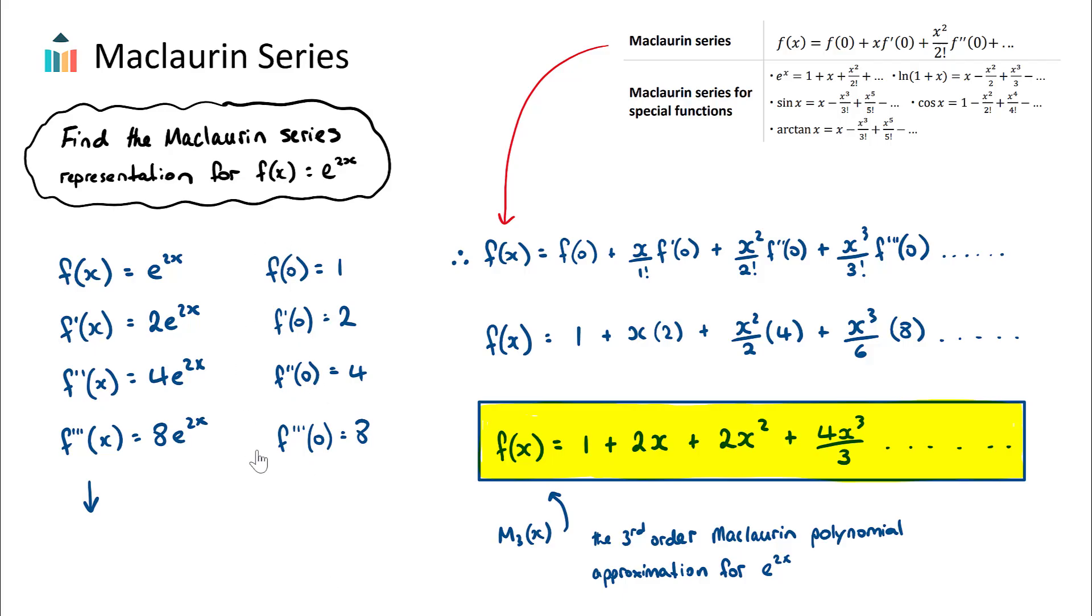But what we can do is now take these and substitute them directly into our Maclaurin series formula, which is in our formula booklet. What this says is that the Maclaurin series, we can find a function f of x, which will be our approximation, our polynomial approximation for whatever function we were given. And it's simply just f of 0, which we have here, plus x times the first derivative of f when we substitute in x equals 0. In the formula here, this doesn't actually have a divided by 1 factorial, but it is quite nice to put this in here because then all of the future terms make sense.